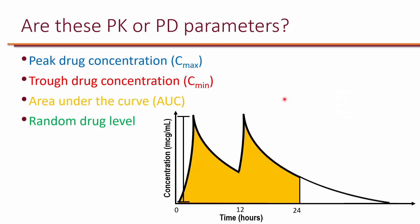Here are some important parameters to know. On the horizontal axis we're looking at time, and on the vertical axis we're looking at drug concentration. Once a drug is given, at the end of infusion you get the maximum concentration, referred to as peak or C-max. Then once we stop the infusion, the body starts to clear it, so concentration goes down until it's time for the next dose. At that time, we have the minimum concentration or trough, also referred to as C-min.